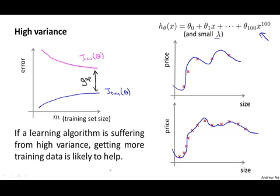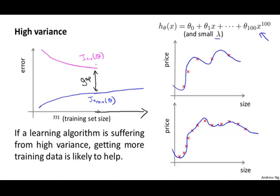Looking at this figure, if we think about adding more training data — extrapolating to the right — we can tell that the two curves, the blue curve and the magenta curve, are converging to each other. If we extrapolate this figure to the right, it seems likely that the training error will keep going up and the cross-validation error will keep going down. Since we really care about the cross-validation error or the test set error, in a high variance setting, getting more training data is indeed likely to help. This seems like a useful thing to know, because it tells you that it may be worth your while to go and get some more training data.